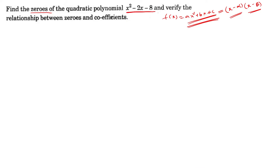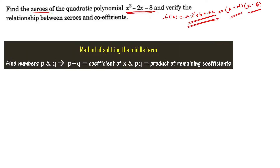For x squared minus 2x minus 8, we first write this as a product of two linear factors using the method of splitting the middle term. We need to find two numbers p and q such that p plus q equals the coefficient of x.